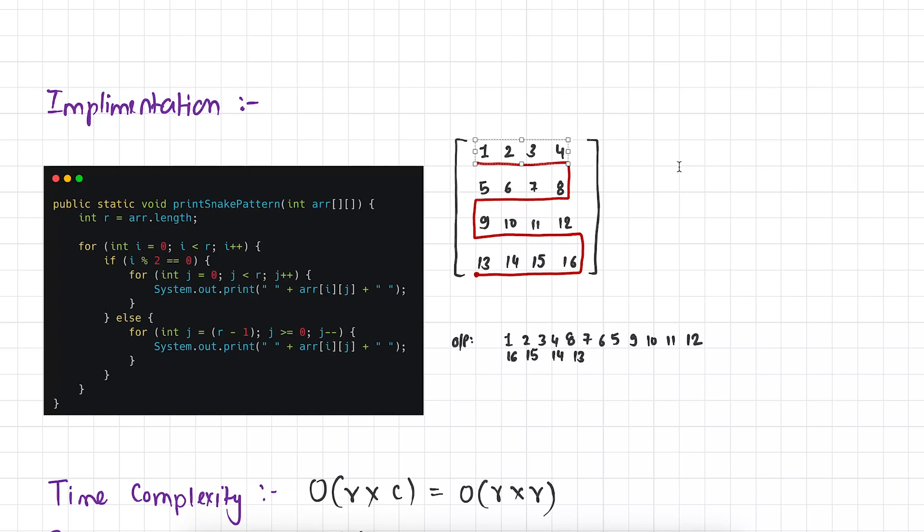Inside of this loop, we are using if statement to determine whether the index of row is odd or even. If we found that the index of row is even then again we are running a loop from j equal to 0 till less than r to print all the numbers from left to right. Now here you can see that I have intentionally put space before and after element. So that it looks good when printed.